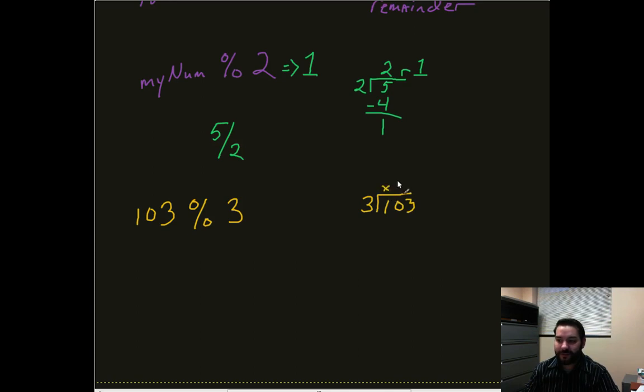Okay, it won't go into there, but it does go into 10 three times. So we deal with 9. All right. Well, that gives me a 1 and a 3. That can go in it 4 times. Suddenly that becomes a 12.